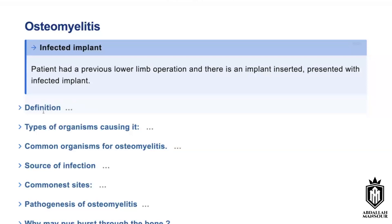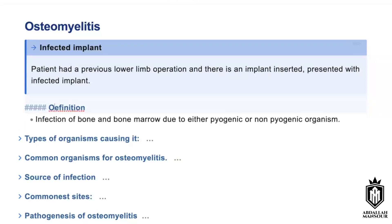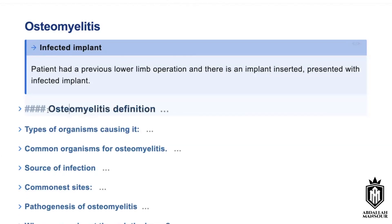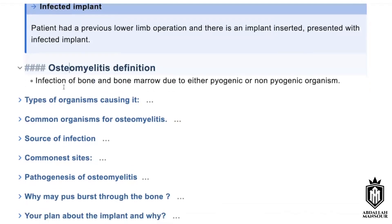What is the definition of osteomyelitis? Osteomyelitis is the infection of the bone and the bone marrow — pyogenic or non-pyogenic infection of the bone and bone marrow.